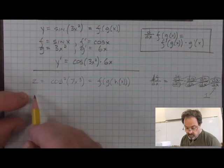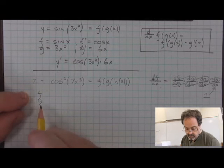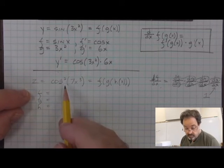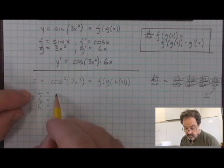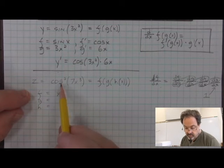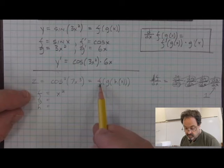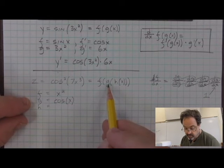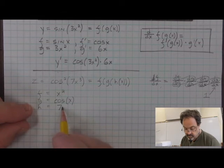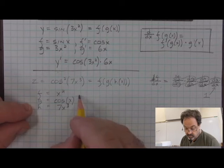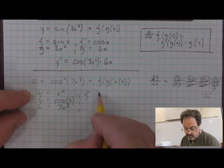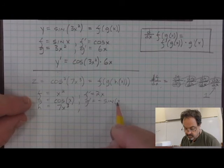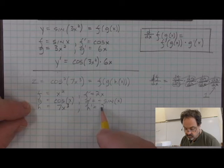So the derivative of z is composed with f, g, and h. We define the f function — the outer function — to be the squaring function, because cosine is going to be squared. So we're composing the squaring function with cosine of 7x cubed. What composes the squaring function, we've called g, and that is cosine of x. Finally, what is composing cosine of x — which we've called g — is the function 7x cubed. The derivative of f is 2x, the derivative of g is negative sine x, and the derivative of h is 21x squared.